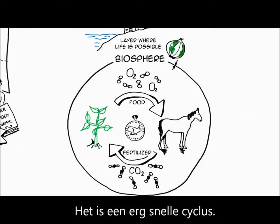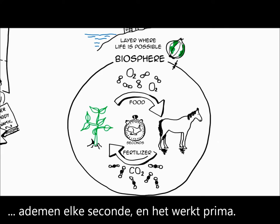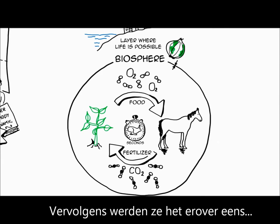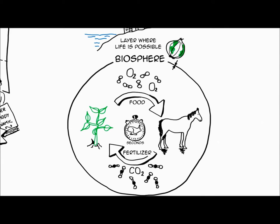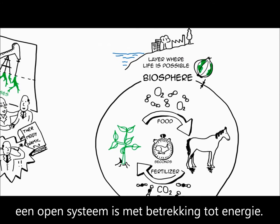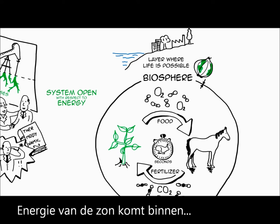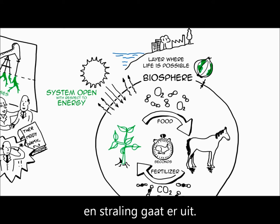And in return, the animals produce fertilizer and CO2 — carbon dioxide — which are used by the plants. And we have a cycle that is well-balanced. This is a very quick cycle. We eat every day and we breathe every second, but it works really well. Then they agreed on the fact that this system, the biosphere, is open with respect to energy. This means that energy from the sun comes in and radiations come out.